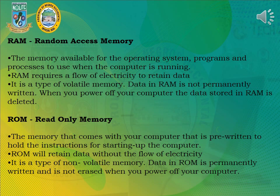RAM is the memory available for the operating system, programs, and processes to use when the computer is running. RAM requires a flow of electricity to retain data — it is a type of volatile memory. Data in RAM is not permanently written; when you power off your computer, the data stored in RAM is deleted.